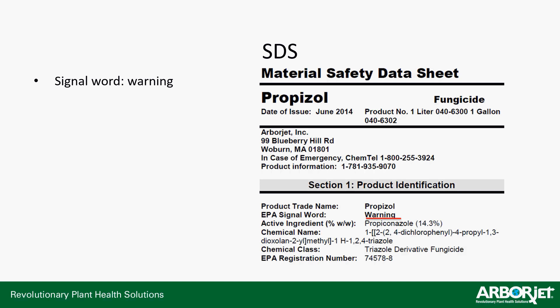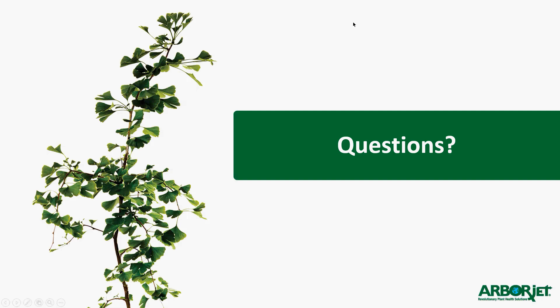Finally, the SDS sheet signal word is Warning. This is available in both one-gallon and one-liter sizes. It's 14.3% propiconazole — the chemical name is listed on the SDS, which I won't try to say right now. Propyzole is from the triazole family, and there are a number of products in that family. You also get the EPA registration number on the label. That's it for Propyzole — does anyone have any questions?